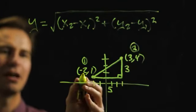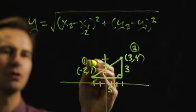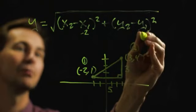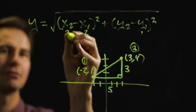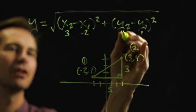So, negative 2 would be our x1. So, we'd stick a negative 2 there. The number 1 would be our y1. So, we'd put a 1 there. This 3 would be our x2. So, we'd stick a 3 there. And that 4 would be our y2. So, we'd stick a 4 there.